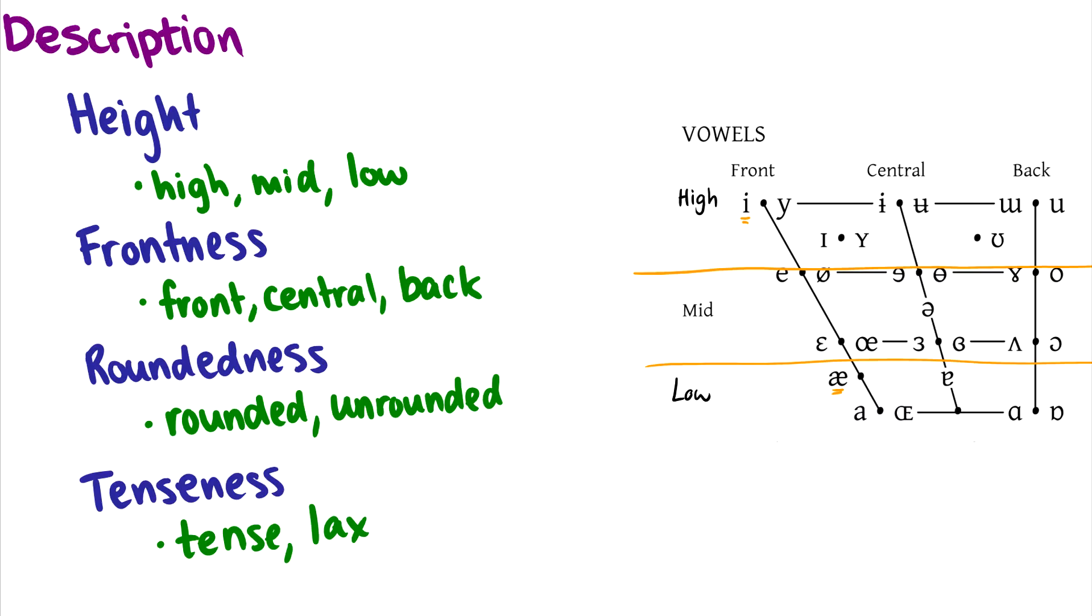Frontness, a sound can either be front, central, or back. So now we can talk about the height, so high, mid, or low, and whether it's front, central, or back. So compare something like ee and oo. They have the same height, but ee is very forward, and oo is very back.